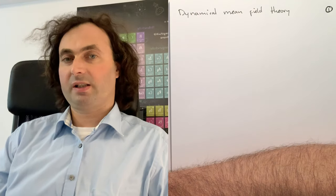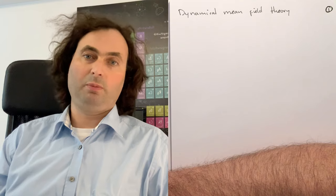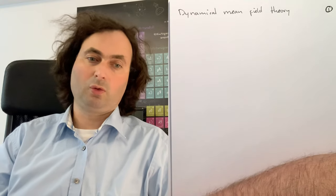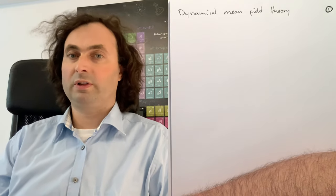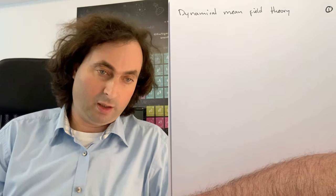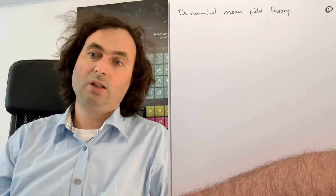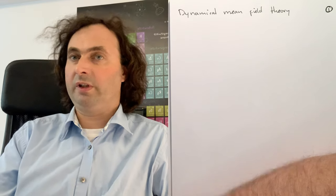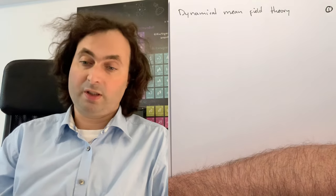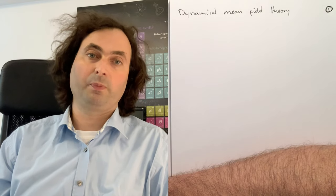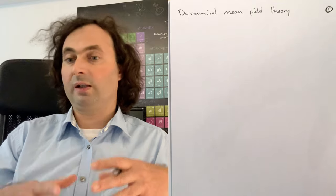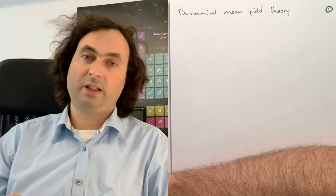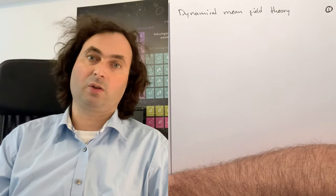Welcome to our next lecture in a series on condensed matter theory. In this video I want to talk about dynamical mean field theory. Dynamical mean field theory is an approximation to find solutions for correlated electron systems on a lattice, where we use self-consistency not based on the charge density as in normal mean field theory, but on the Green's functions of the system, such that we are able to describe the response functions in a self-consistent manner.